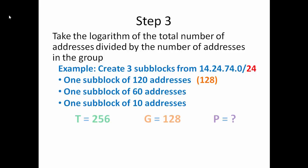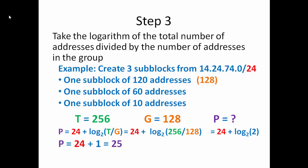That looks like this: T is 256, G is 128, and P, or our prefix, is going to be 24, or the original netmask or prefix from our starting address, plus the log of 2 to T divided by G, which is 24 plus the log of 2 to 256 divided by 128. Breaking that down even more, 256 divided by 128 is 2. And how do we figure out log 2 of 2? Well, we simply say 2 raised to the power of what will equal 2. In this instance, it's going to be 1. Well, in every instance it's going to be 1, right? So 2 raised to the power of 1 is going to be 2. Anything raised to the power of 1 is itself. So we have 24 plus 1 equals 25.